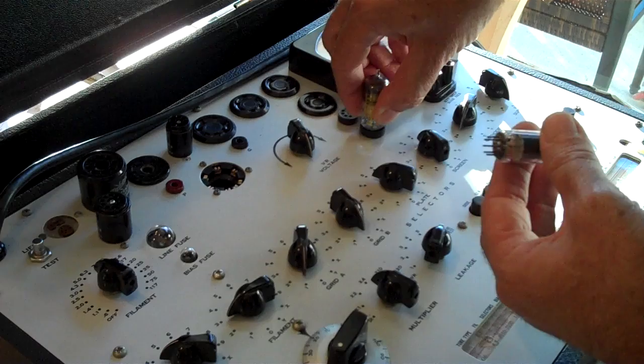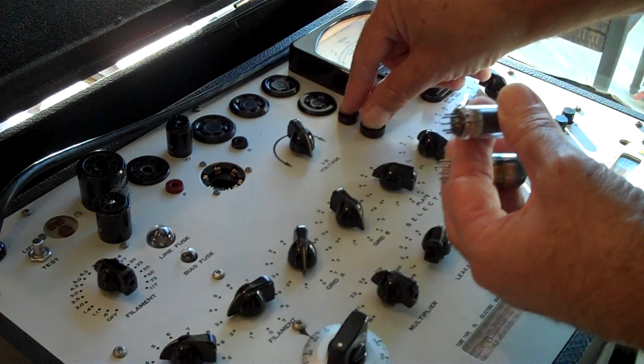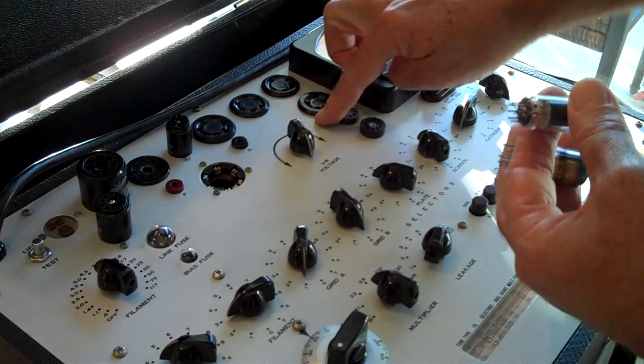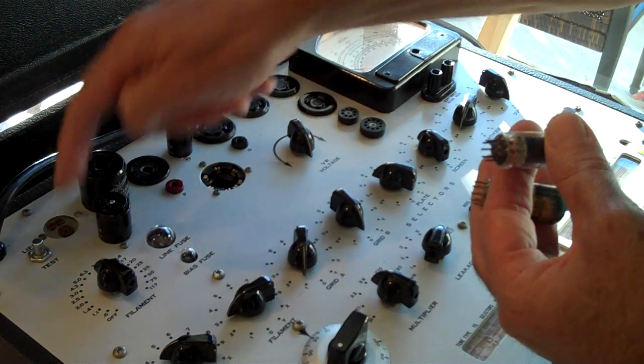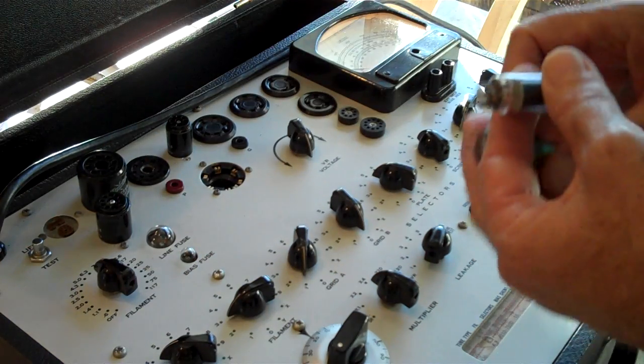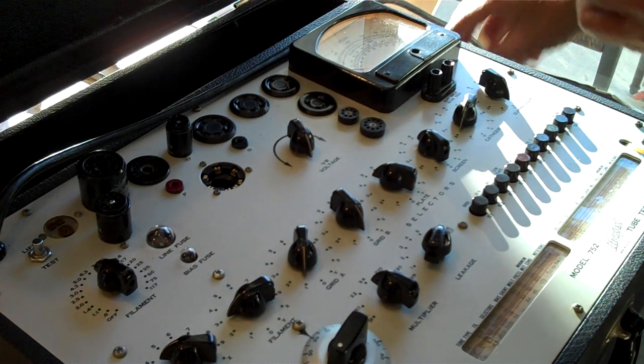And half these sockets, I don't even know what they're for. These are just pin straighteners over here for each set, for two sizes. But I have never used these. That one has a life test too, which on power tubes is great. You can see if they're worn out or not.